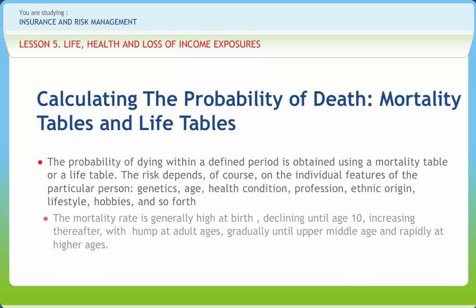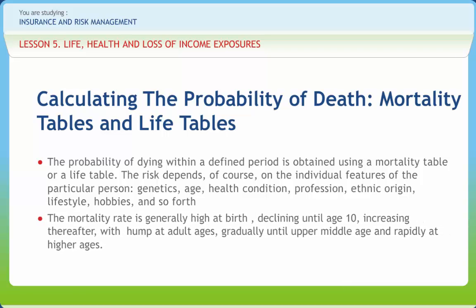The mortality rate for males is relatively high at birth but declines until age 10. It then rises to a peak between ages 18 and 22, and declines between ages 23 and 29. The rise is rather slow until middle age, at which point it begins to accelerate.